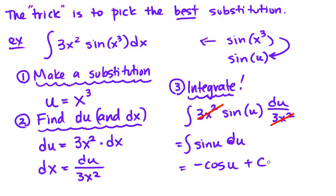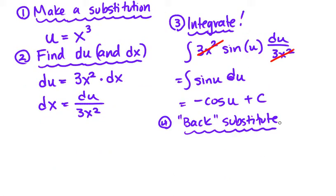And I go to my last step, called back substitution. When I back substitute, I am putting my original variables back in. So I can just continue this. It becomes -cos, and the u is equal to x³, and then plus C. And that's the indefinite integral of my original question.